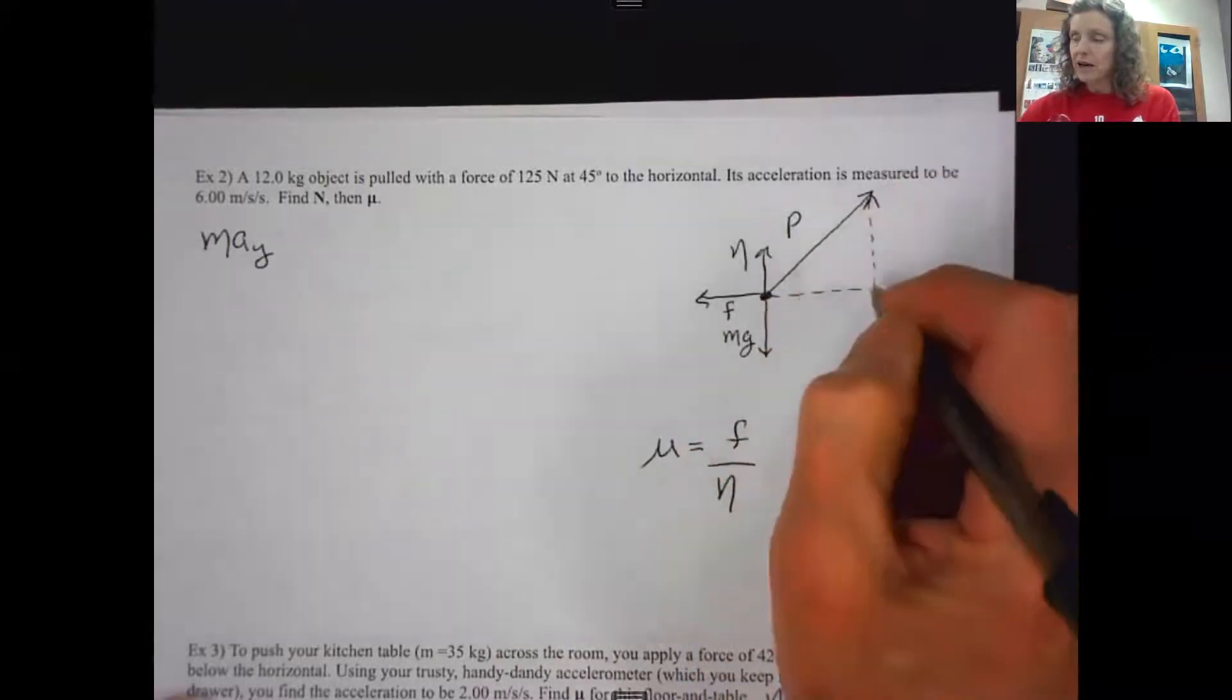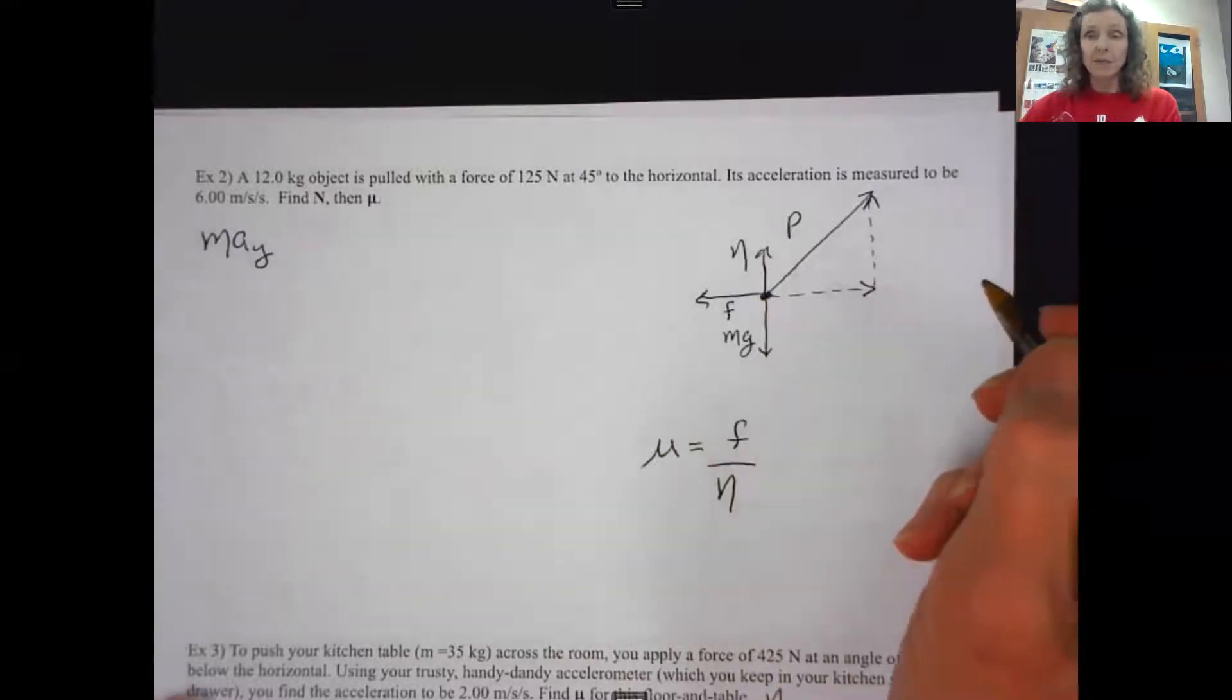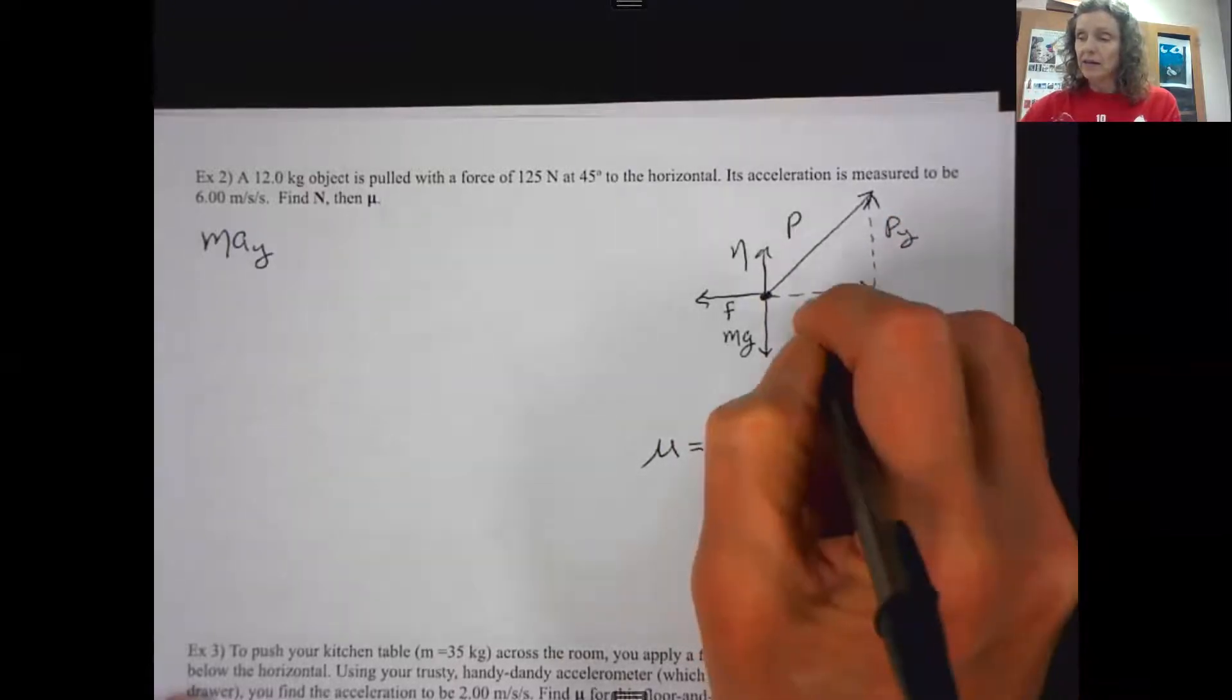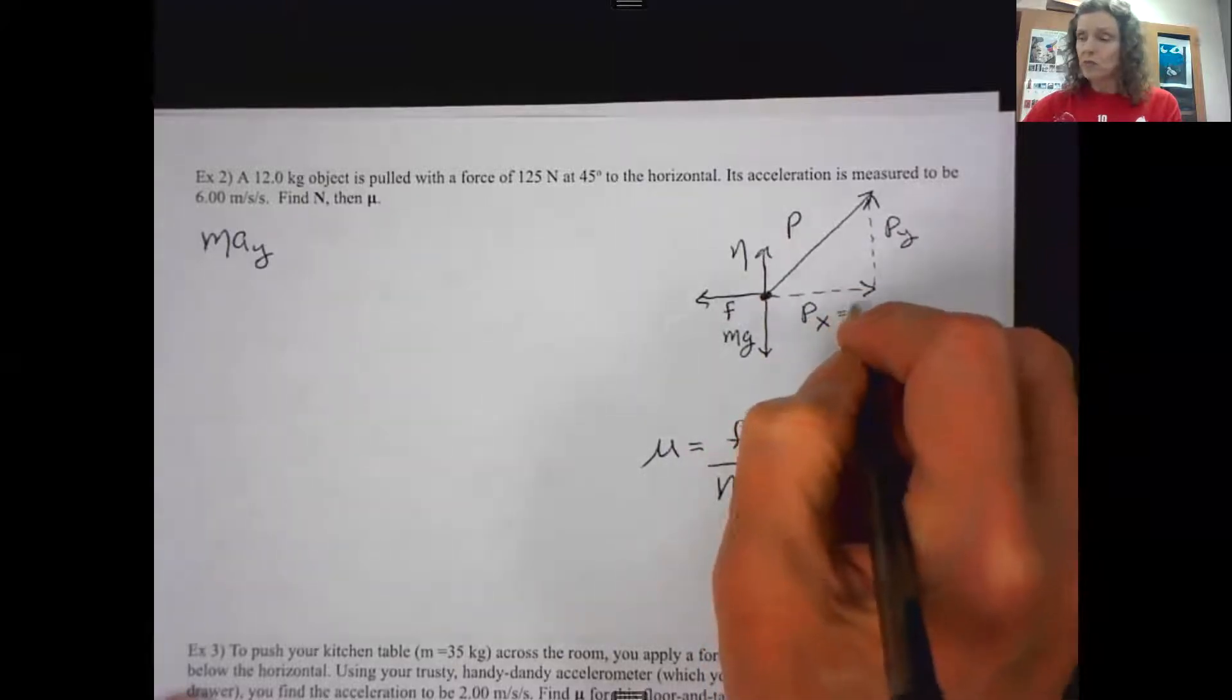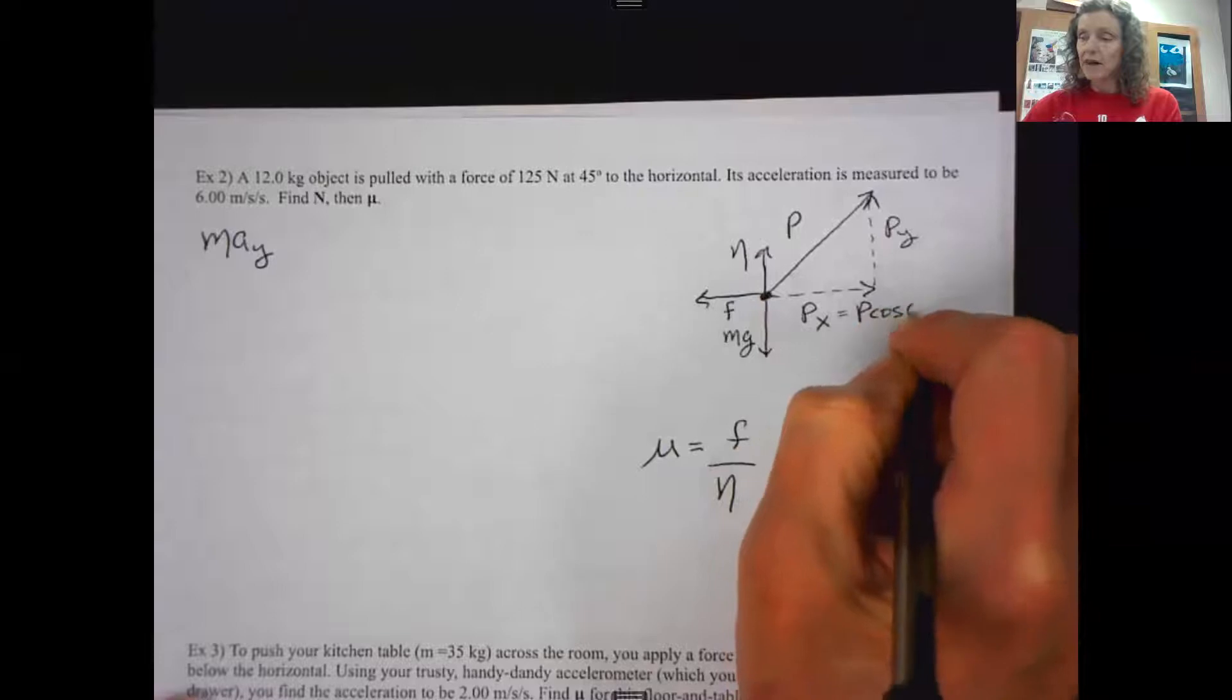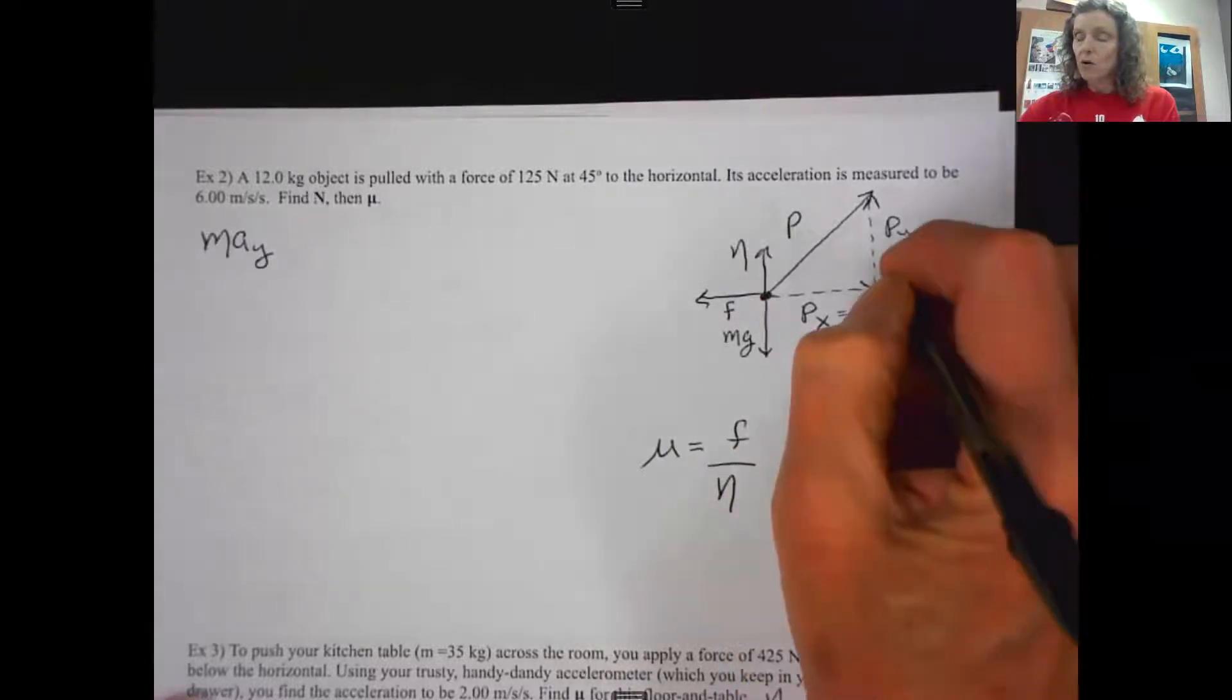So it's not really outlandishly large. It's just that that's helping me see py and px. And instead of putting y and x, if you want to, you can just go straight to p cosine theta for the x component or p sine theta for the y component.